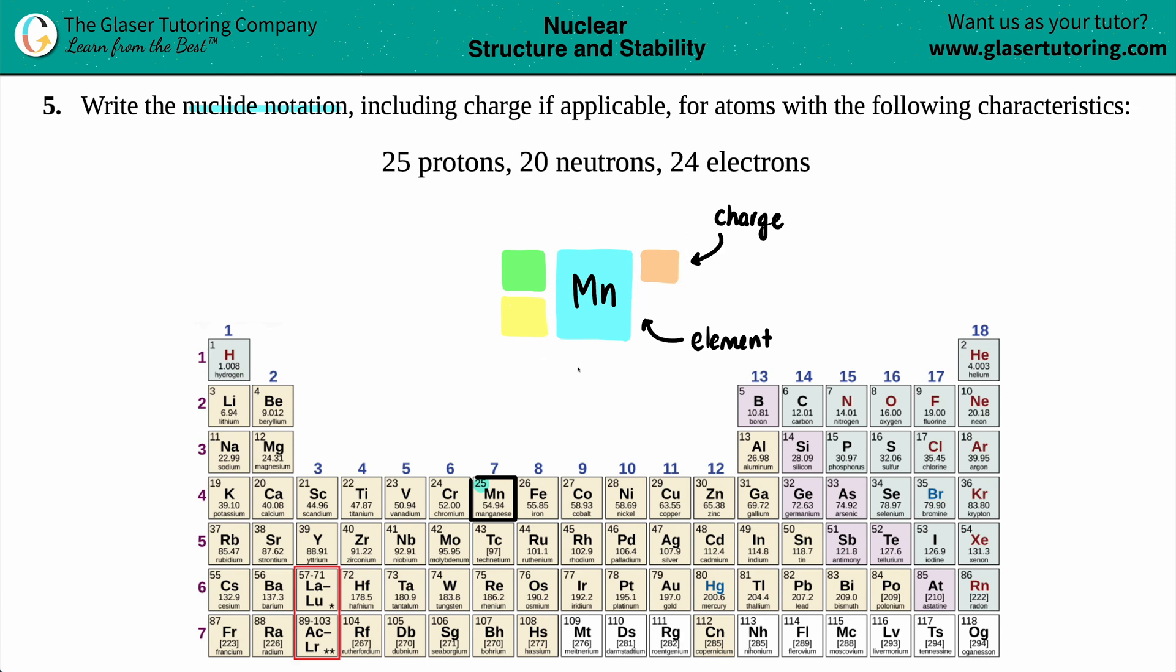Three more to go. Now let's work from the bottom up. The bottom number for your nuclide notation is going to be your atomic number. Now the atomic number is a fancy way for saying, drum roll please, the number of protons. And they gave us that information, 25. So I'm putting a big 25 right in the bottom number.